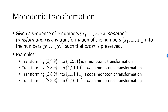If you start with 2, 8, 8 and transform them into 1, 10, 11, we again have a transformation which is not monotonic. If x2 and x3 are equal, then for the transformation to be monotonic, y2 must be equal to y3.